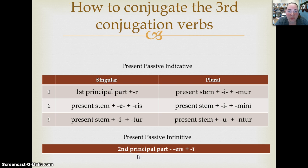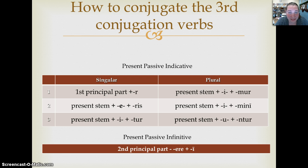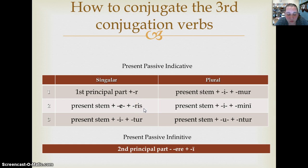Here is how you conjugate a third conjugation verb in the present passive system. For the present passive indicative, you need your first principal part plus the R ending for the first person singular. For the rest of the forms you need the present stem. The I tells you that you're in the present, the U in the third person plural, and then you add the same passive endings — R, RIS, TUR, MUR, MINI, NTUR — that you learned for the first and second conjugations. The only thing to keep in mind is that for the second person singular, instead of I plus RIS, it's a short E. That lack of a macron is an important lack of a macron.